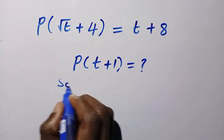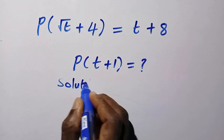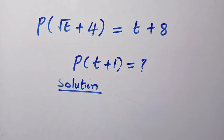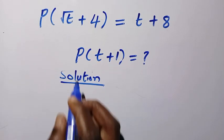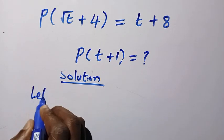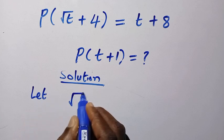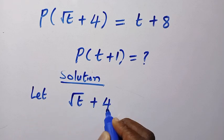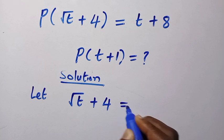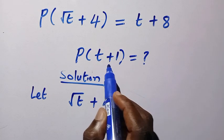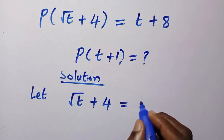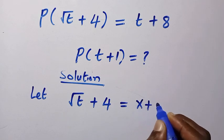So first thing we do is write the solution and apply the substitution method. Here we are going to let the square root of t plus 4 equal another variable, but the variable will be in the form of what we need here. For this expression, let's use x + 1.